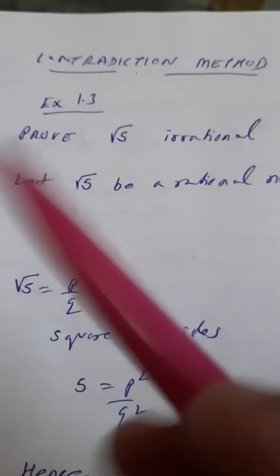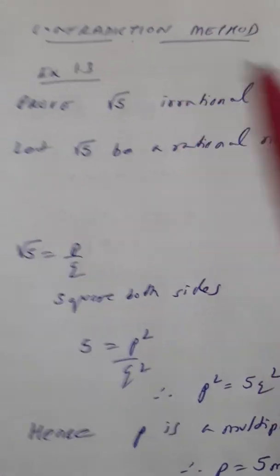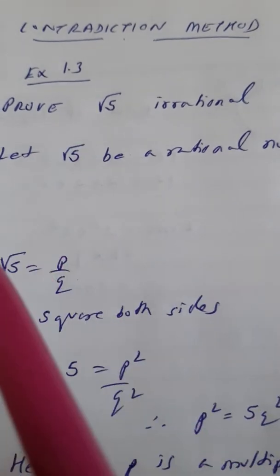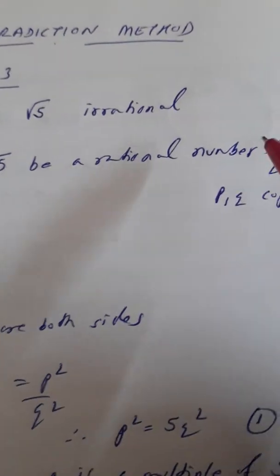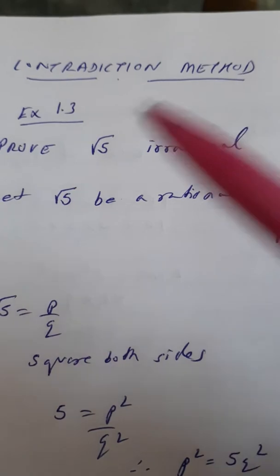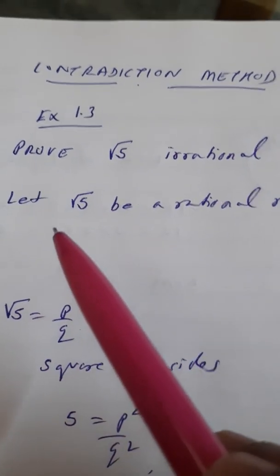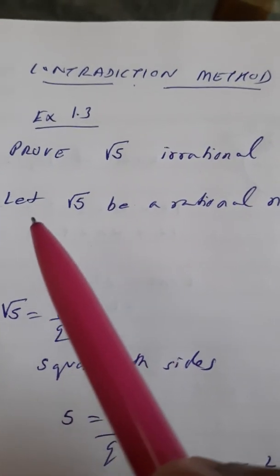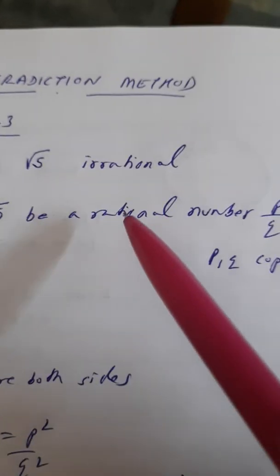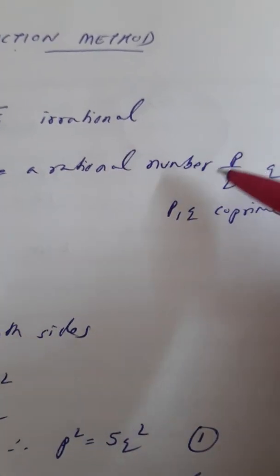So the method is like this: contradiction. Let root 5 be a rational number. We have to prove it's irrational, but we are proving by a contradiction. The starting statement is opposite: let root 5 be a rational number.